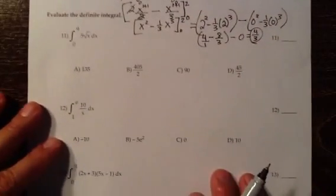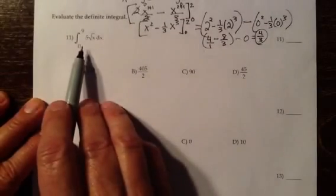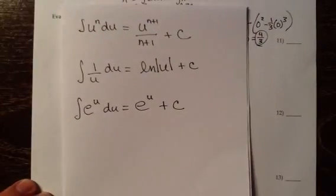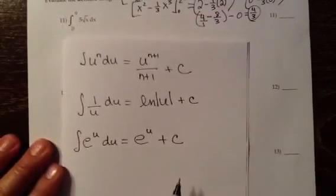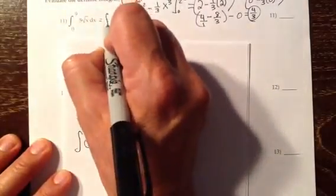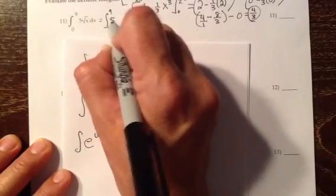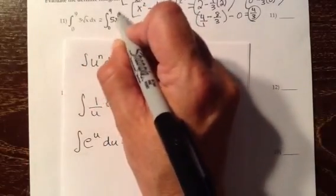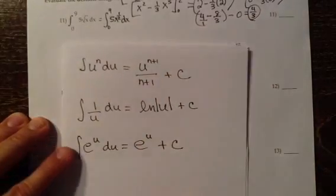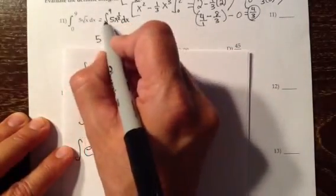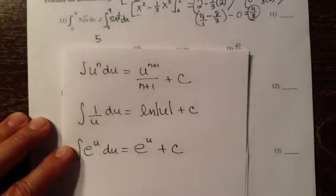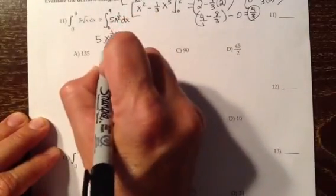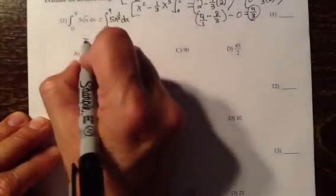On number 11, we're evaluating the definite integral and we want 5 square root of x to fit one of the integration formulas. Whenever you see a radical, you should rewrite it in exponential form — x to a rational power, x to the 1/2. The 5 goes in front, and when you integrate x to the 1/2, use the power rule: x to the power plus 1 — that's 1/2 plus 1 — all over the power plus 1.